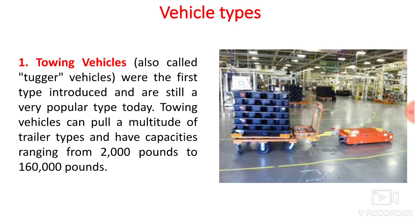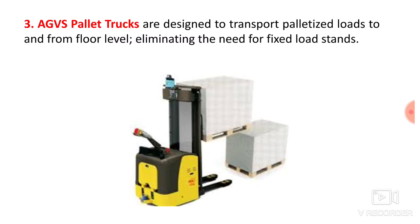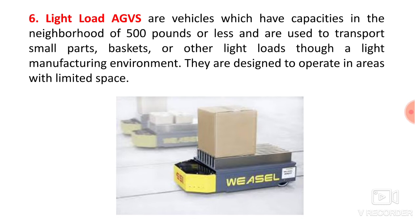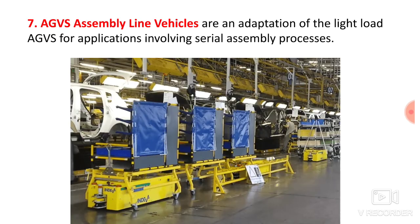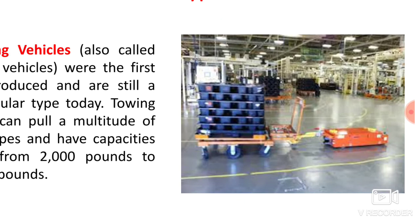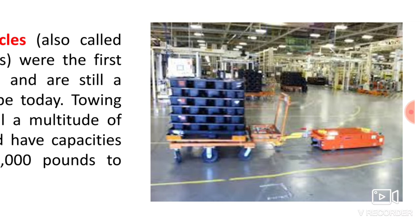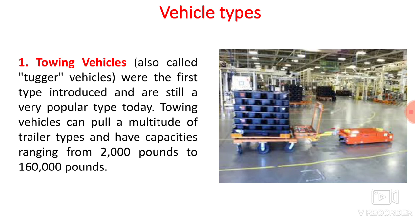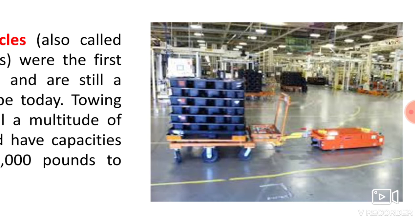There are seven types of automated guided vehicles. The first is the towing vehicle, also called tugger vehicle — the first type introduced and still very popular today. Jobs are placed on a trailer and towed by the AGV. Towing vehicles can pull a multitude of trailer types with capacities ranging from 2,000 pounds to 160,000 pounds.